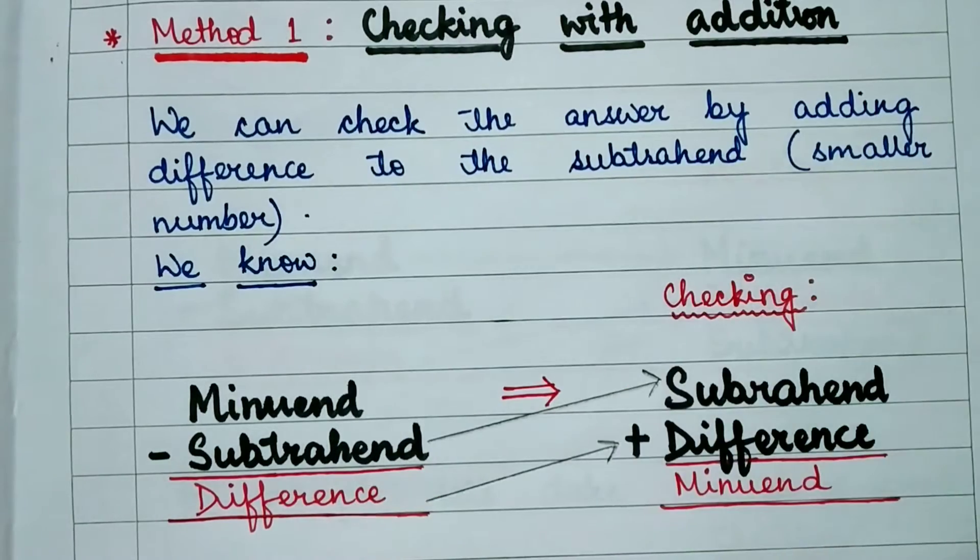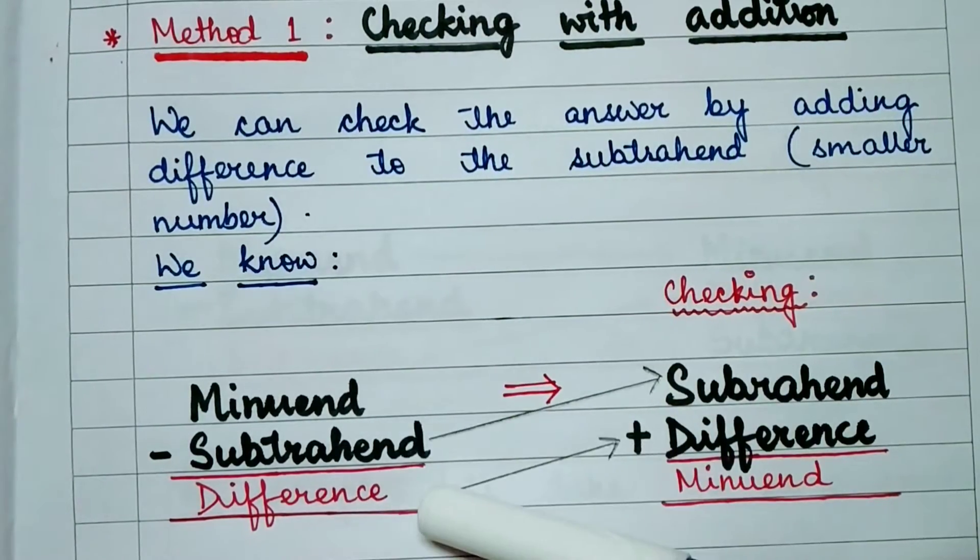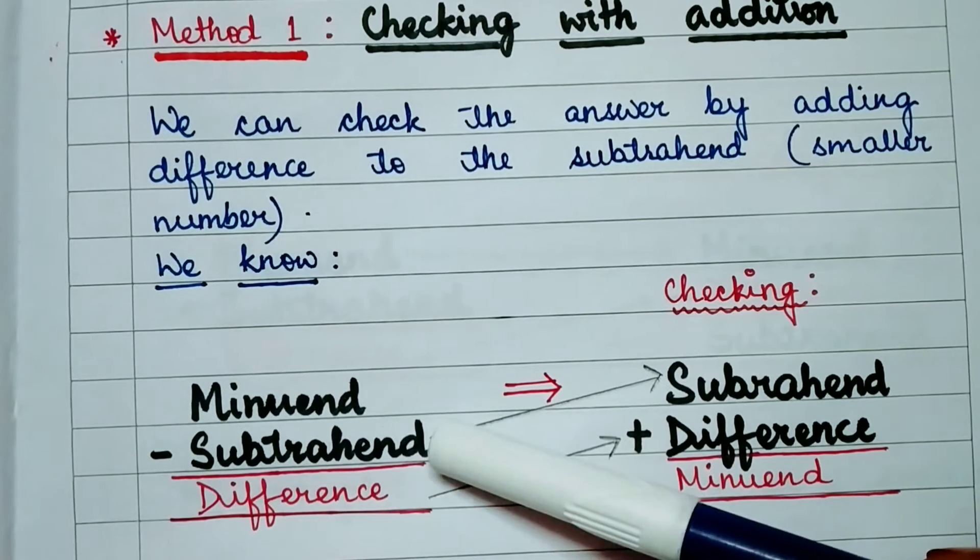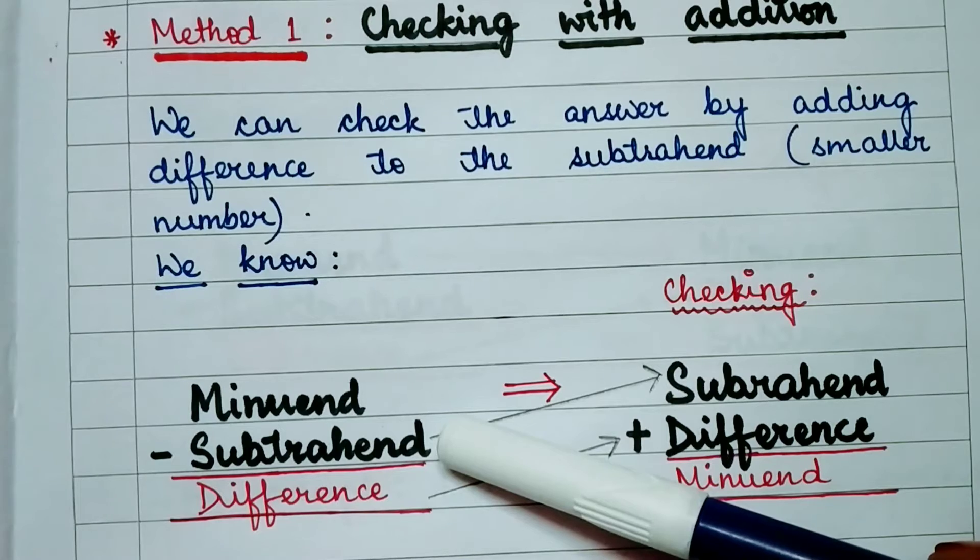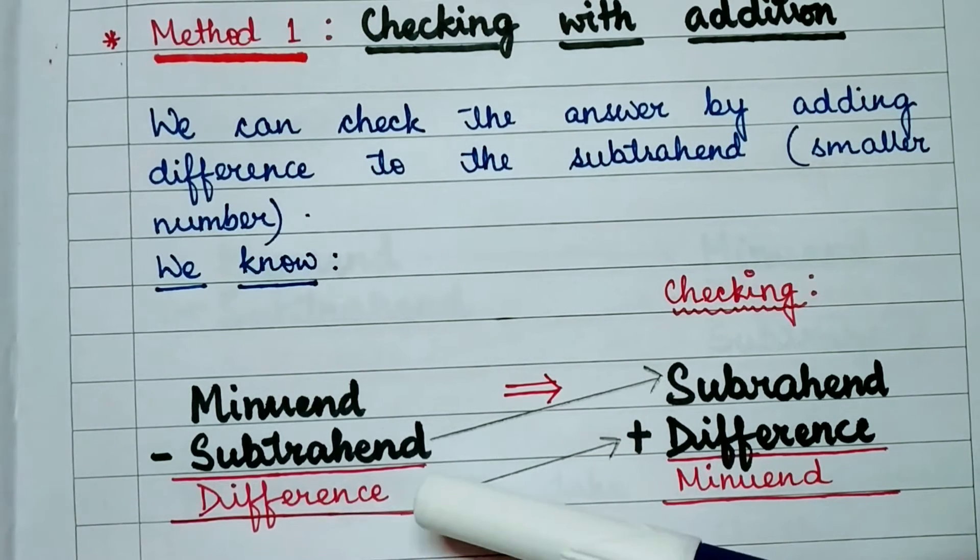The subtrahend is the smaller number. So here this is the standard form of subtraction. The bigger number is called minuend and the smaller number which is subtracted is called subtrahend and the result we obtain after subtraction is called difference.